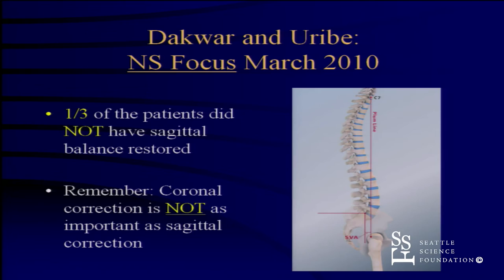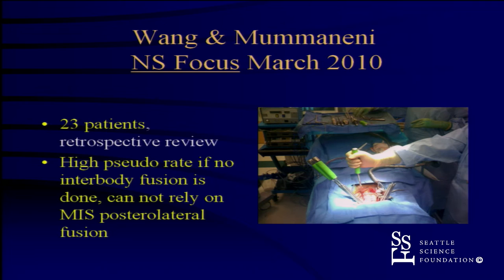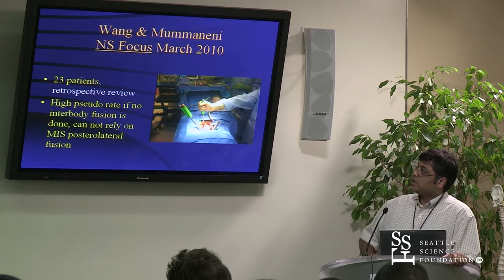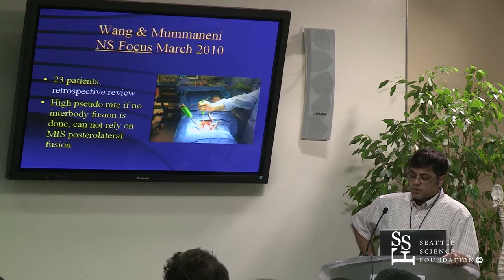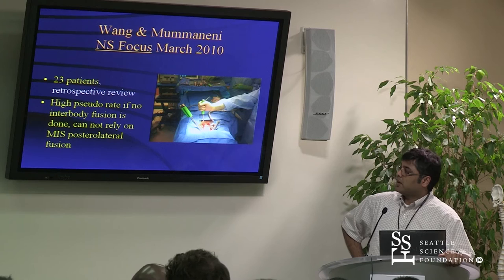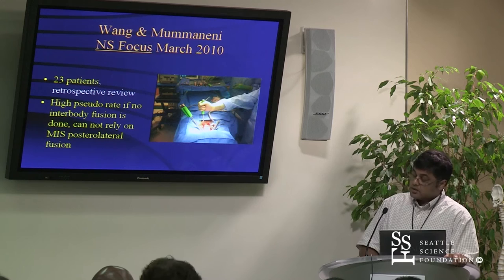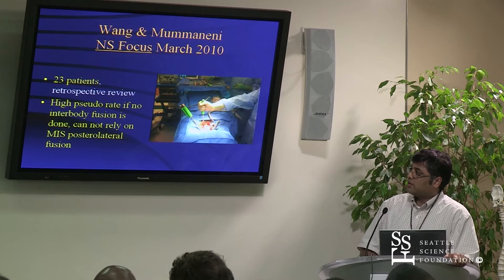Mike Wang and I looked at a series in 2010 in NSFocus and what we figured out was we can't rely on our posterolateral fusions through a tube. Patients who had interbodies tended to fuse. Patients where I tried to put a tube down, rub up the facet joints, and pack in iliac crest autograft through a tube — a lot of those got pseudos. If we're going to do these procedures and not do an interbody at every level, are we going to get pseudos? Or if we do add an interbody at every level, we're making the surgery bigger and more expensive.